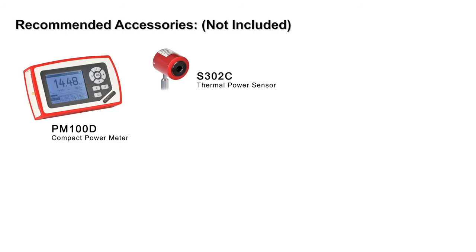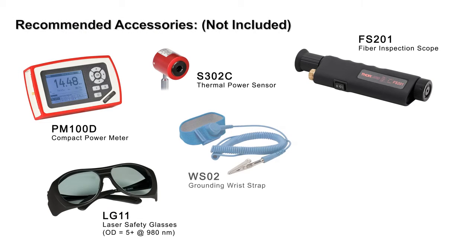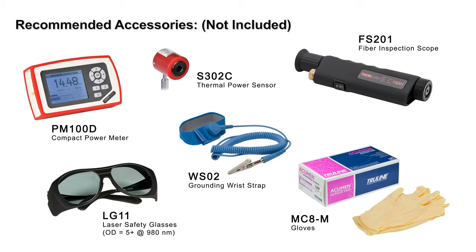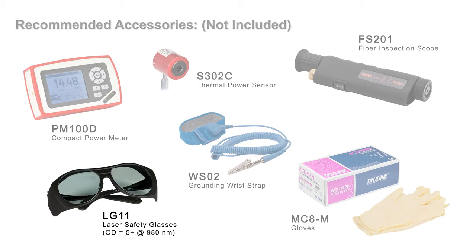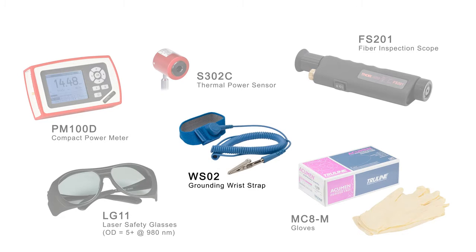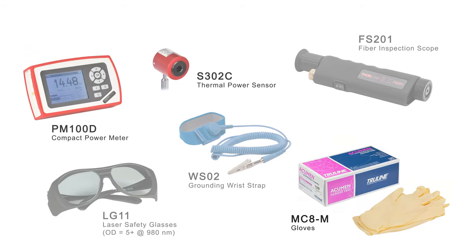To aid in the safe and successful alignment of the OTKB, we recommend several accessories. Laser safety goggles should be worn whenever the system's laser is turned on during installation. Electrostatic discharge protection is also required whenever handling the system's laser. Gloves should be worn whenever handling optics. A power meter can be utilized for the precision alignment of the tweezer system.